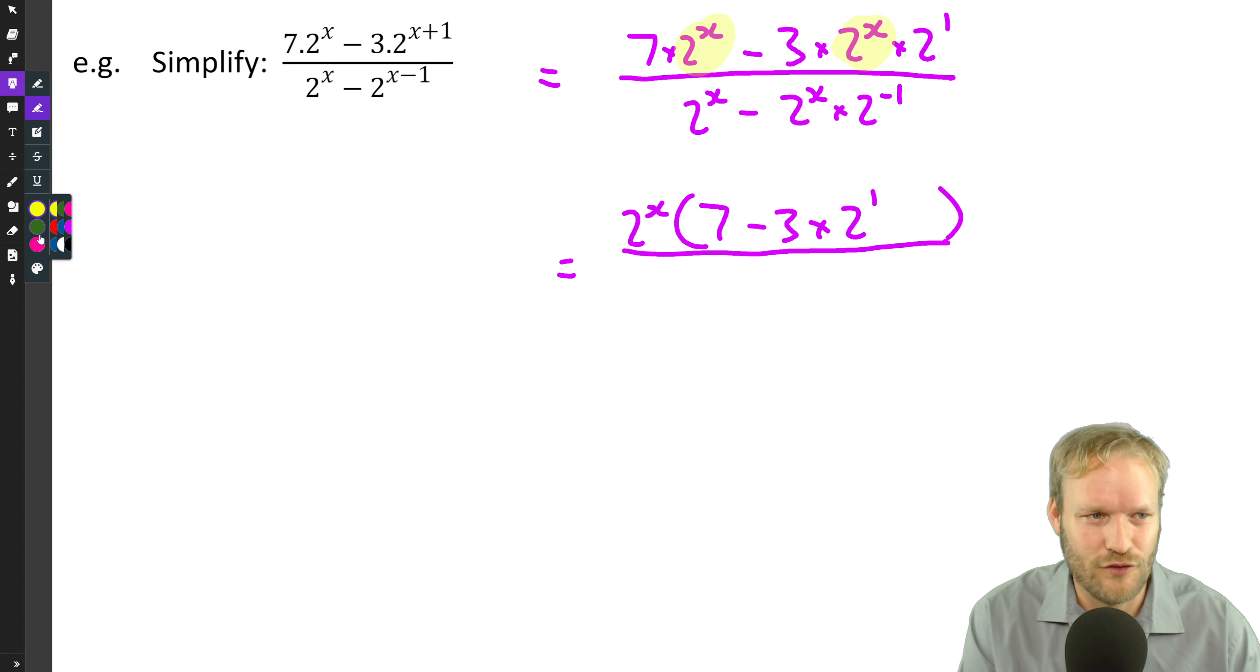Denominator, we're going to look for the common factor. Well, it happens to also be two to the x. That's convenient because in the next step, they'll cancel out nicely. So I'm going to take a two to the x out. And what am I left with? Well, easy. There are two terms on the denominator. So there must be two terms in this bracket. Notice how I've been saying that each time. Just counting the terms to go two terms here, which means there must be two terms in the bracket.